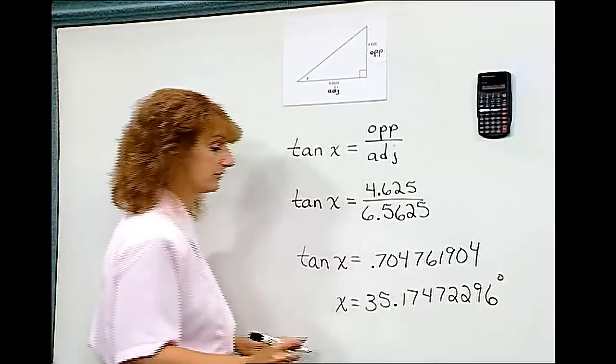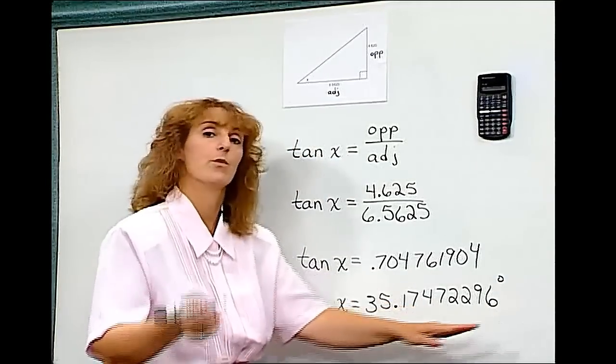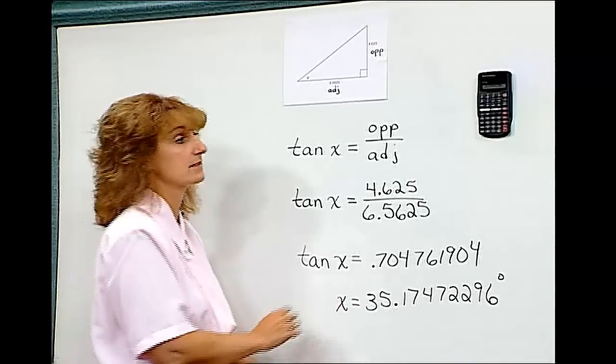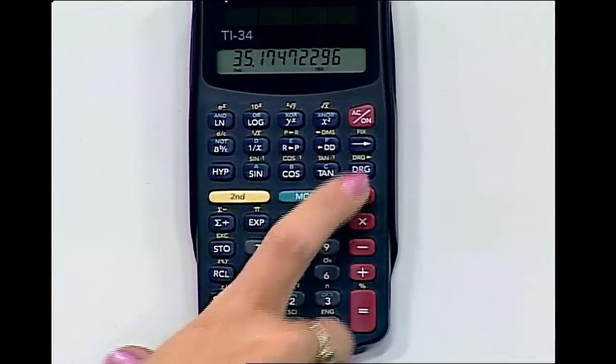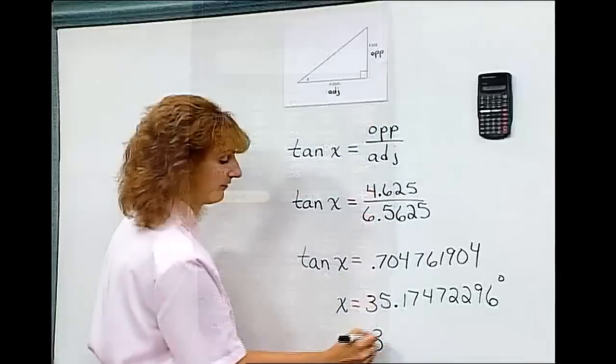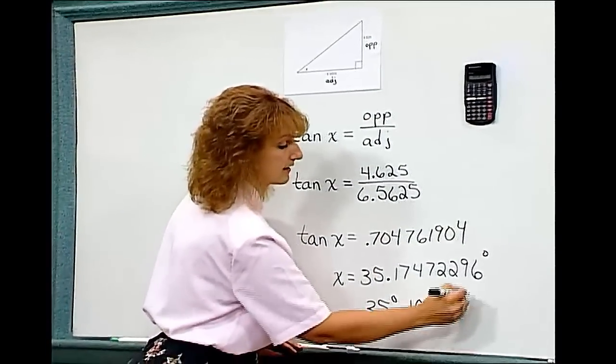That's degrees, but that's a very long decimal degree. And we already know how to switch that to degrees, minutes, seconds. We come back to our calculator, hit second, degrees, minutes, seconds. And we get 35 degrees, 10 minutes, 29 seconds.